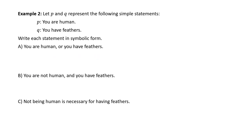Example: Let P and Q represent the following simple statements. P: you are human. Q: you have feathers. Write each statement in symbolic form. First English statement: 'You are human or you have feathers.' Here we use the symbol for 'or' (∨): P ∨ Q.